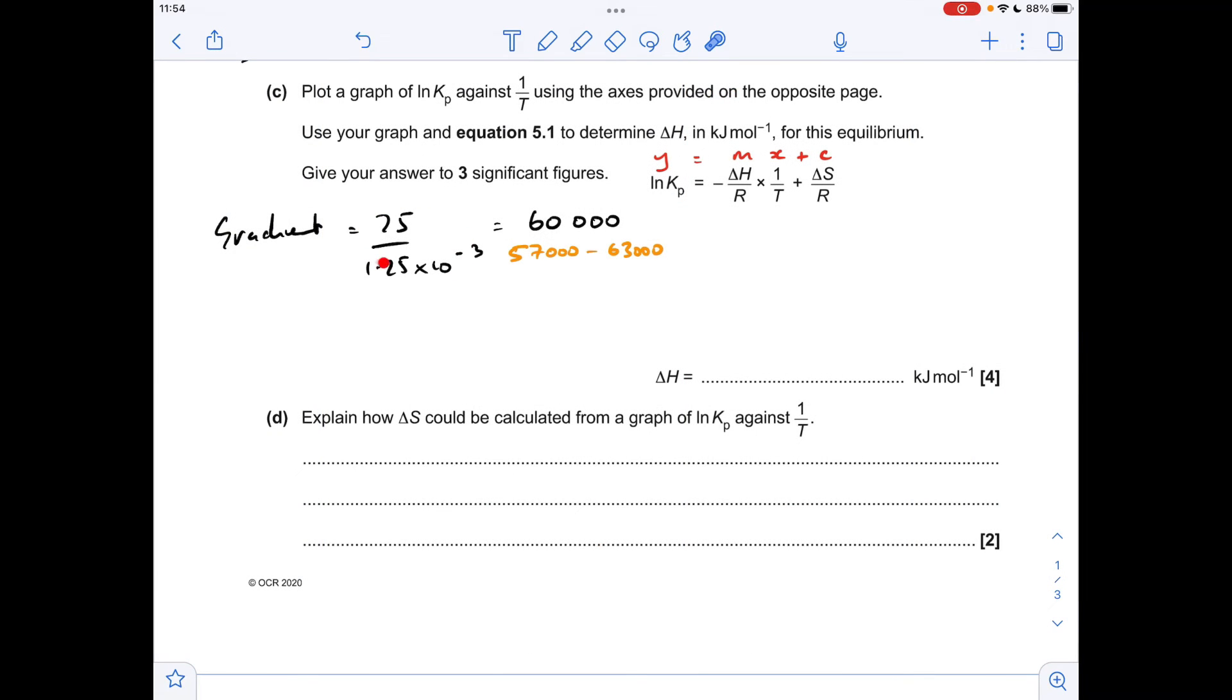So plugging those numbers in for the calculation of the gradient, I'm getting a numerical answer of 60,000. These orange numbers are just the range allowed in the mark scheme by the way, so you can go from 57,000 up to 63,000. Obviously I'm within that.